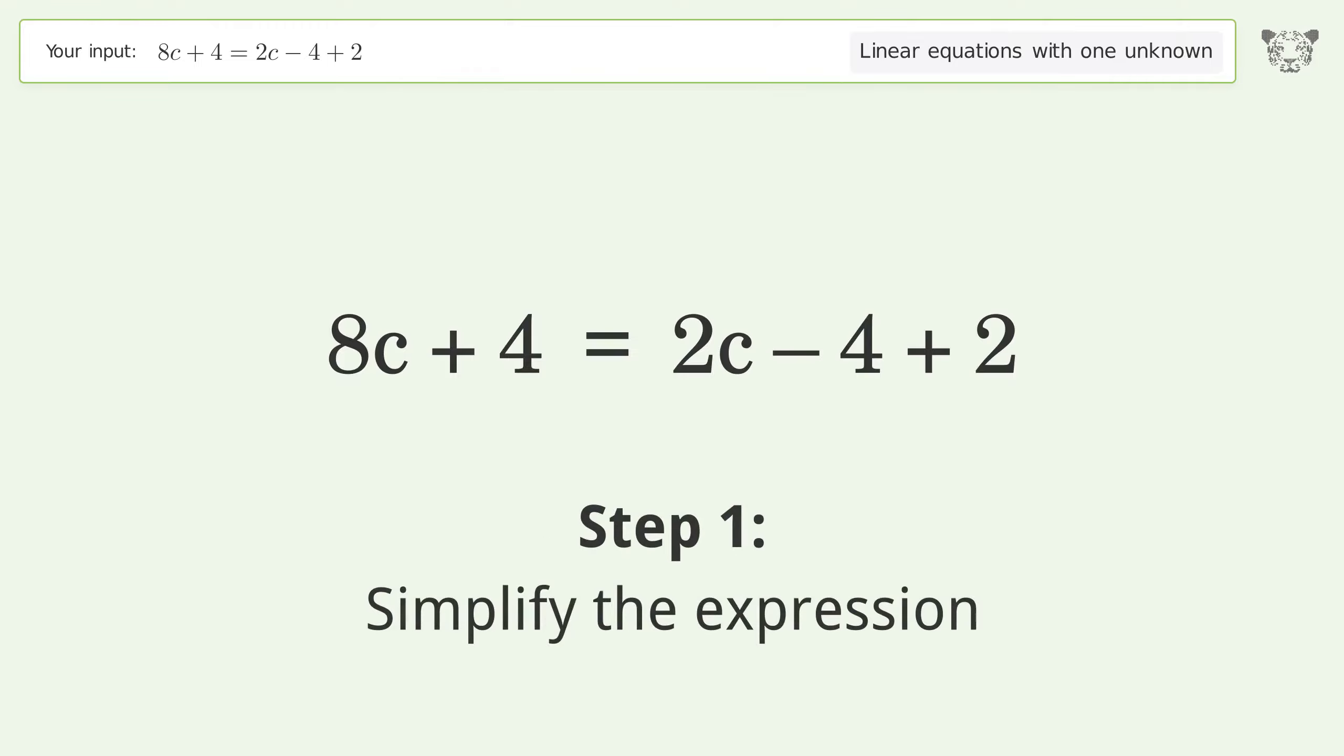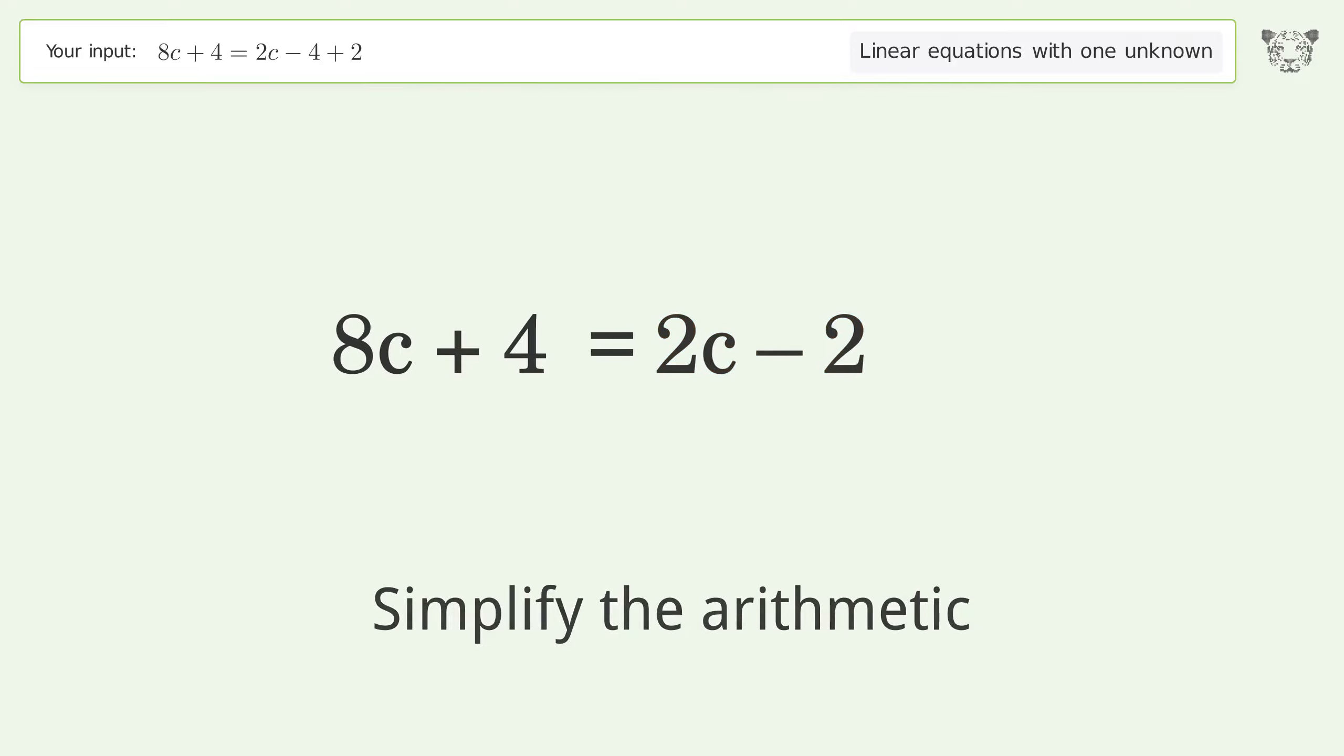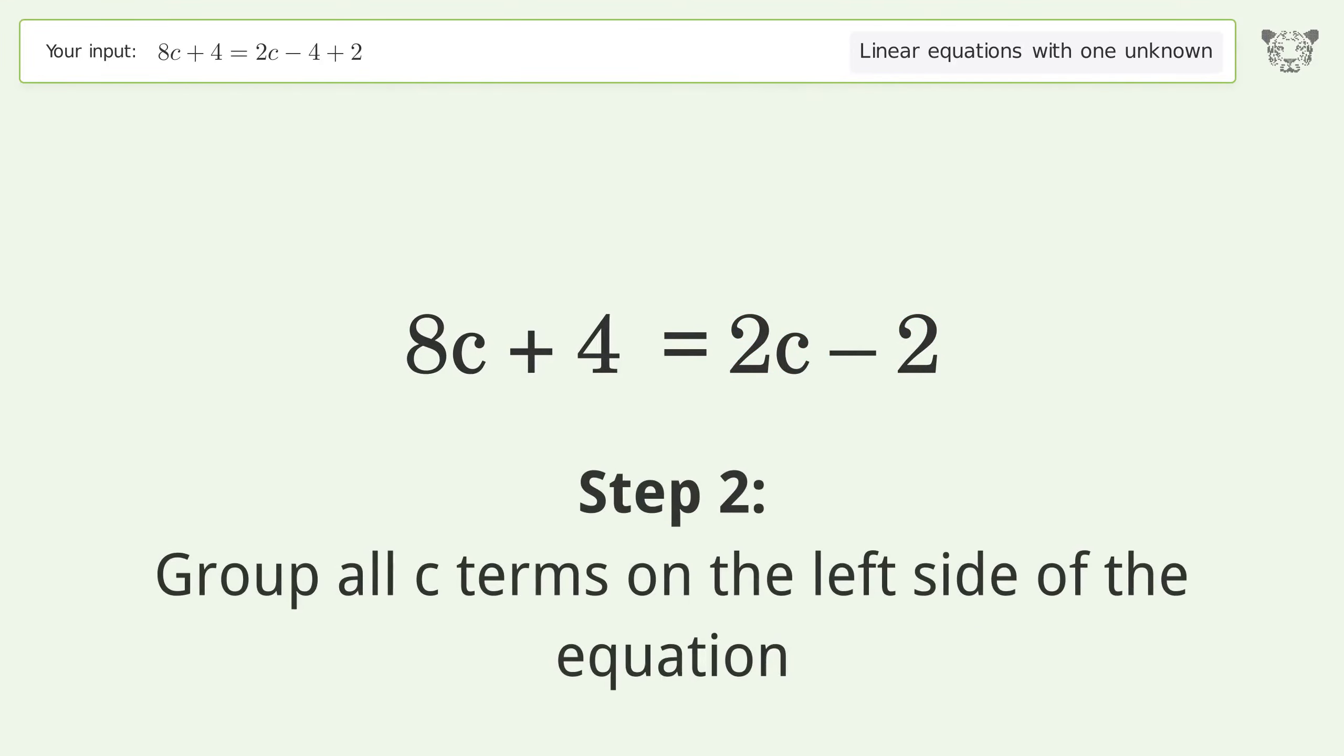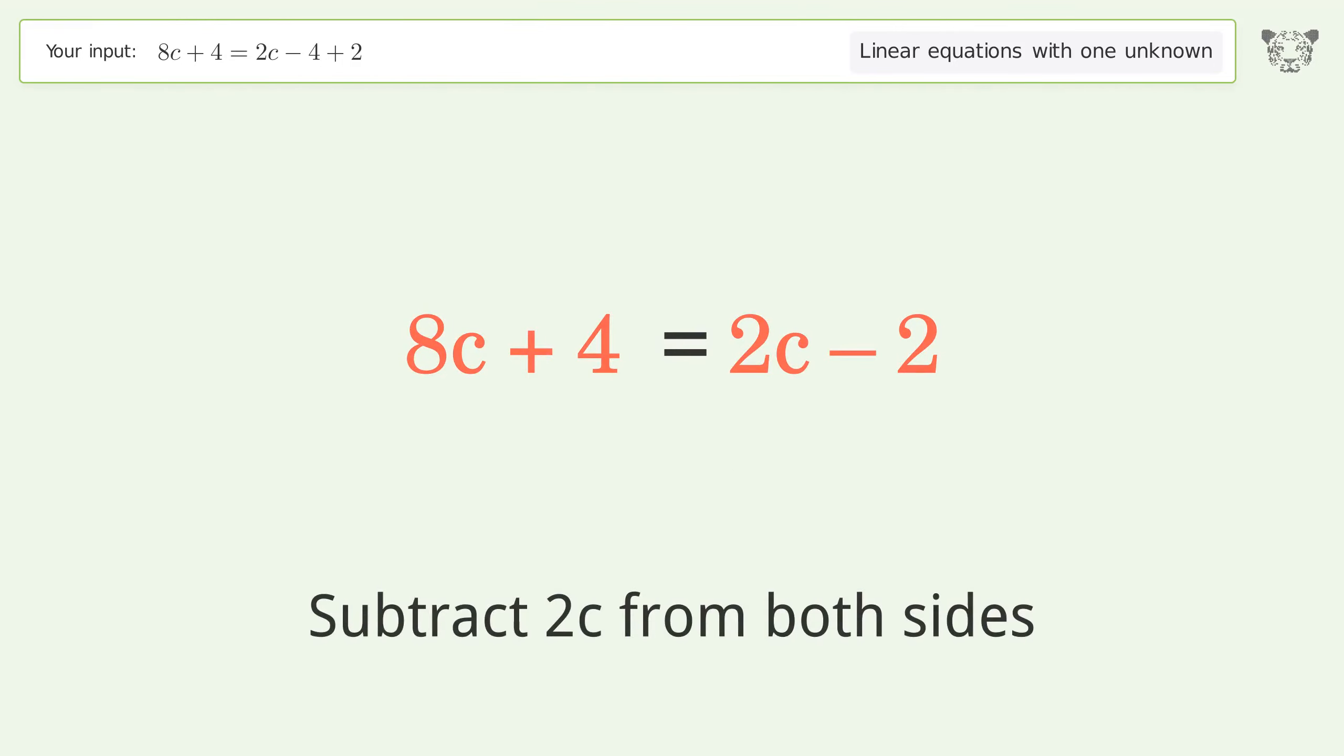Simplify the expression and the arithmetic. Group all c terms on the left side of the equation by subtracting 2c from both sides.